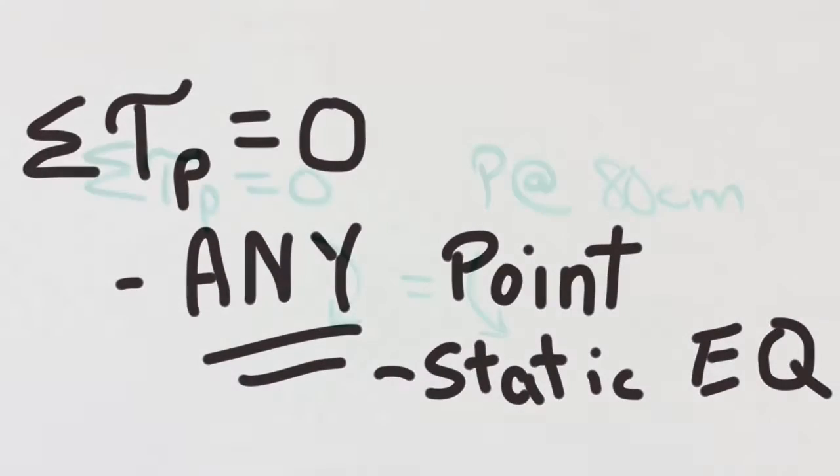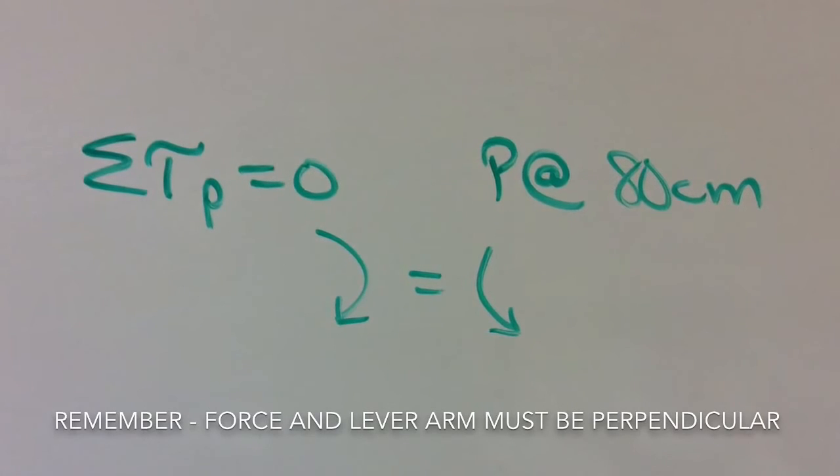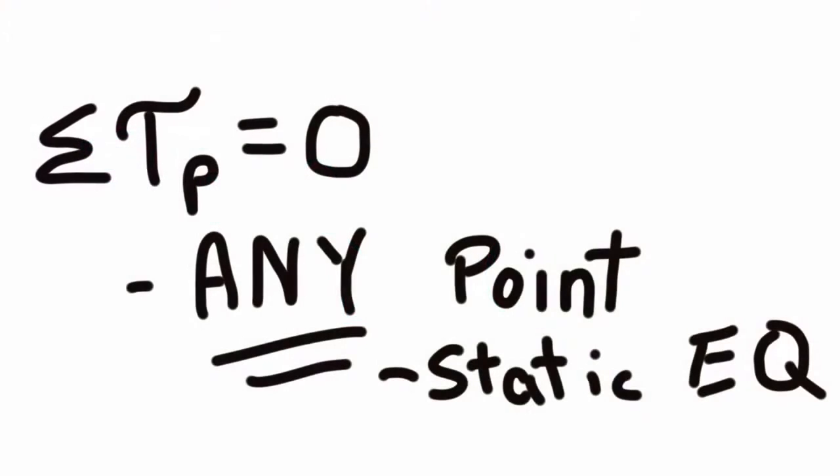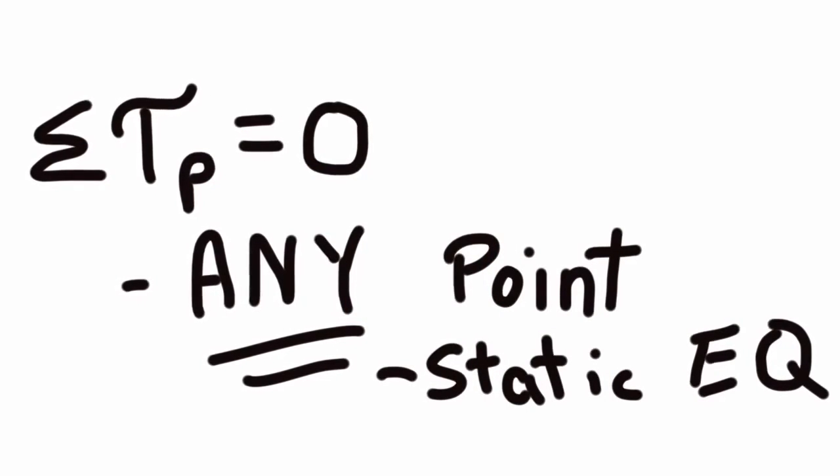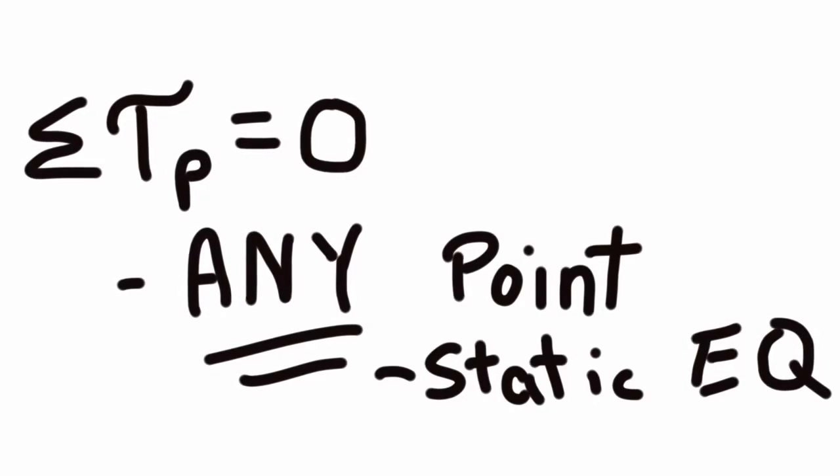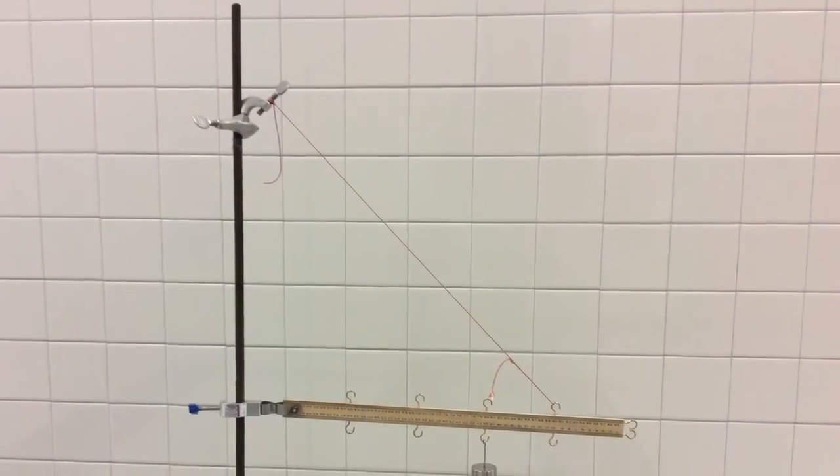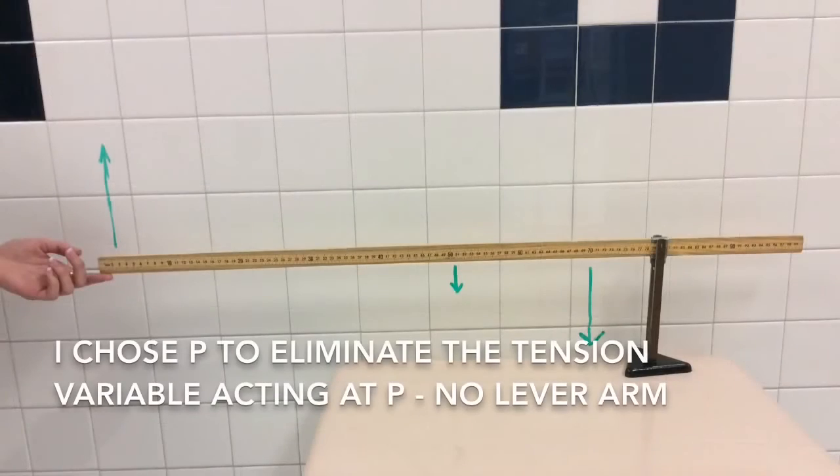The net torque about any point in the universe is equal to 0. Rather than using positive and negative torques, we use clockwise torque equals counterclockwise torque, and this is how you determine it. Since this is static equilibrium, I can choose any point in the universe, and I have chosen to choose the attachment point of the tension, which I've shown here with this lever on a fulcrum. You can use your pencil to help you out here.